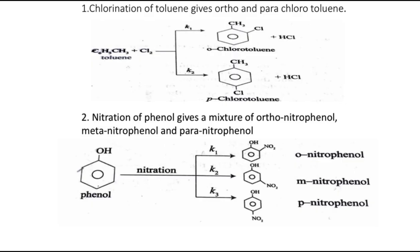The first example is chlorination of toluene — toluene is methyl benzene. Under different conditions, in one way it results in the formation of ortho-chlorotoluene, and in another way para-chlorotoluene. Similarly, nitration of phenol under different conditions gives different products: ortho-nitrophenol, meta-nitrophenol, or para-nitrophenol. So nitration of phenol undergoes parallel reactions resulting in the formation of three different products.